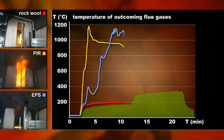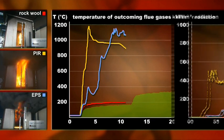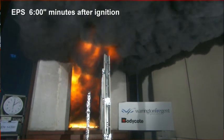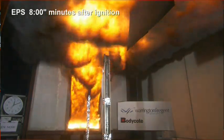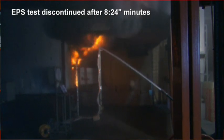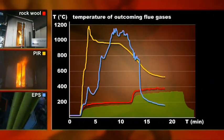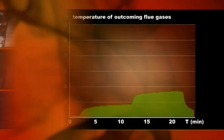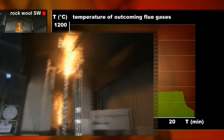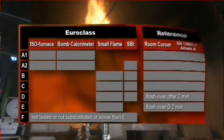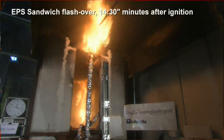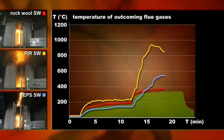For class D, the capacity growth must also remain below a certain value — less than or equal to 7.5 kilowatts per second. At a nearly identical escaping flue gas temperature for PIR and EPS, the radiation levels differ significantly. The EPS test was halted prematurely due to controllability issues. Rockwool is practically identical to the zero measurement. The capacity increase during the fire must be less than or equal to 1.5 kilowatts per second.